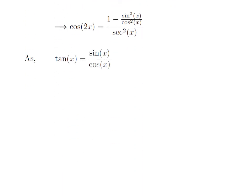As we know, tangent of x is equal to sine of x divided by cosine of x. After applying this identity, we get cosine of 2x is equal to 1 minus square of tangent of x, divided by square of secant of x.